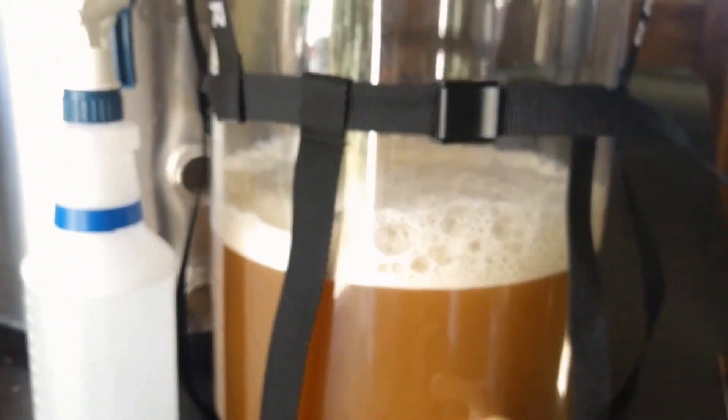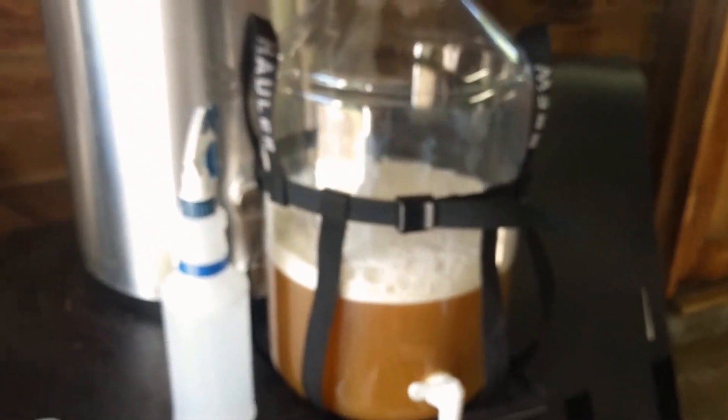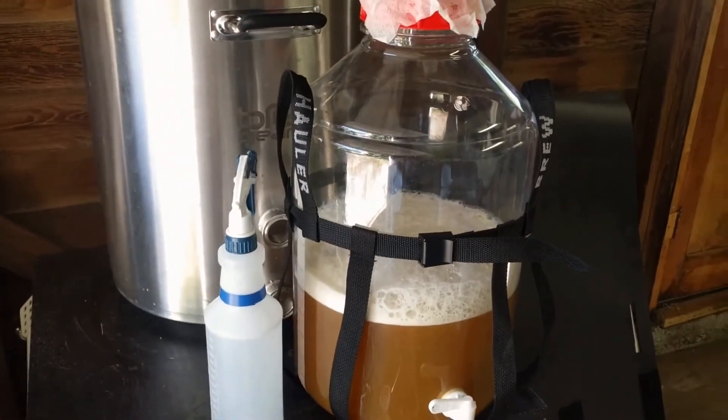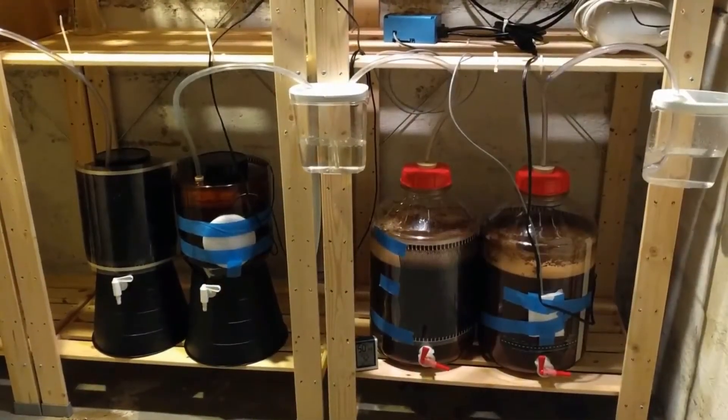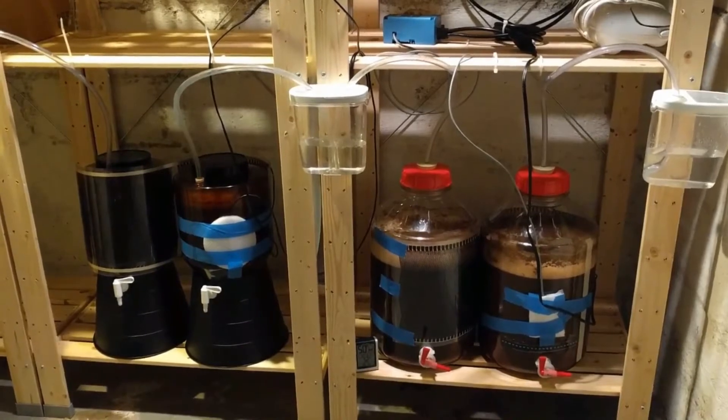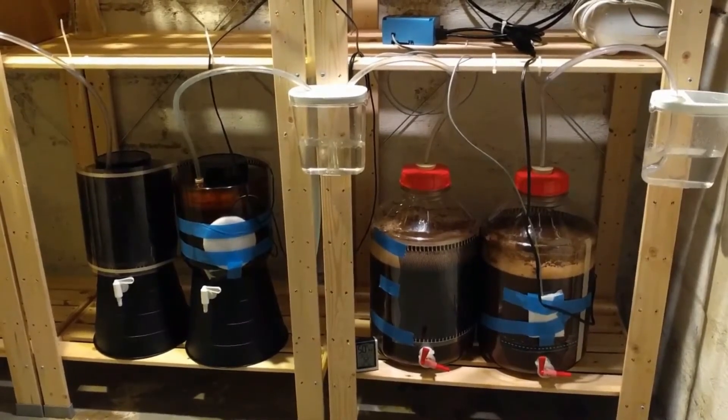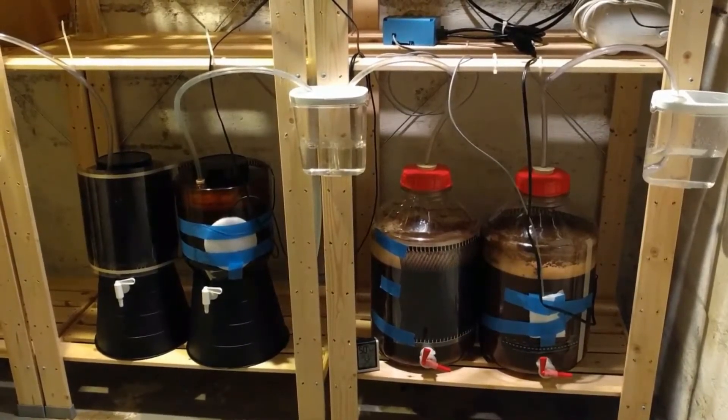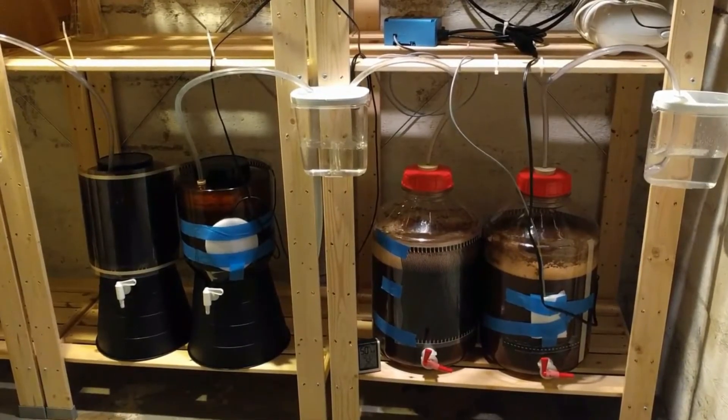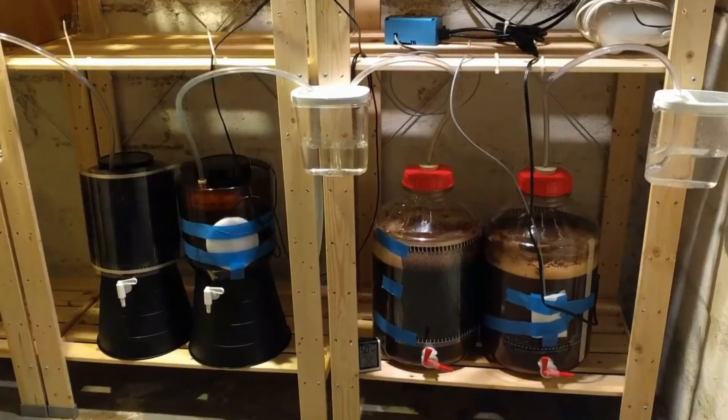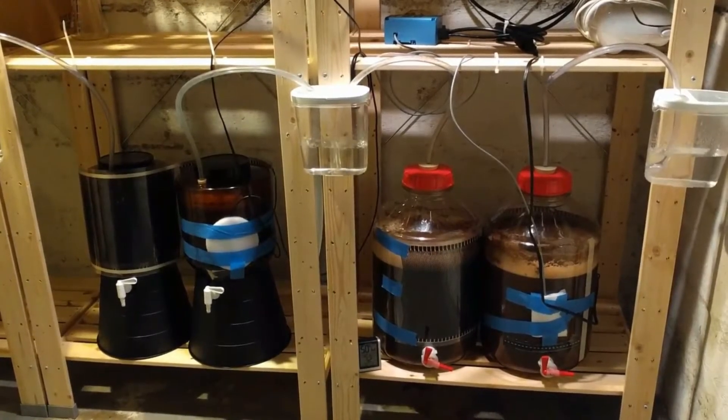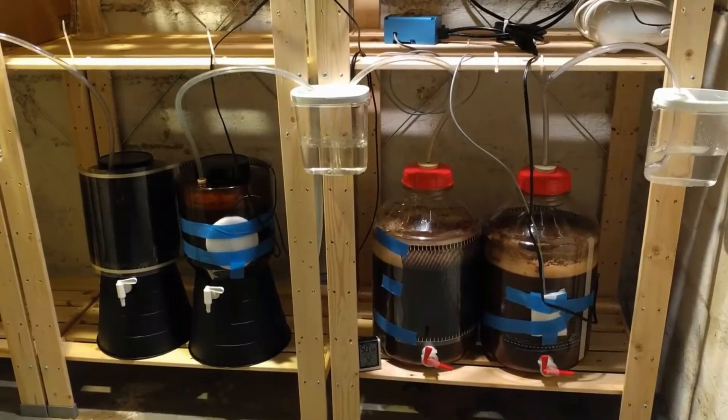So first of all, there's another little piece of information you should know: your typical White Labs or Wyeast smack packs have approximately 100 billion cells in the package on manufacturing. Now there is a cell loss over time, that's a different matter. Your dry yeast packs, it depends on the yeast—typically S-04, S-05 from Fermentis is going to have somewhere around 200 billion cells.